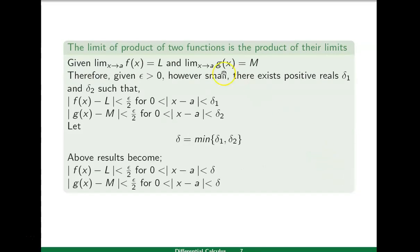Next we prove the product rule: if limit of f(x) is l and limit of g(x) is m then limit of f(x)·g(x) as x approaches to a is equal to l·m. Applying the epsilon-delta definition, there exists delta-one such that |f(x)−l| less than epsilon/2 for zero less than |x−a| less than delta-one, and there exists delta-two such that |g(x)−m| less than epsilon/2 for zero less than |x−a| less than delta-two.